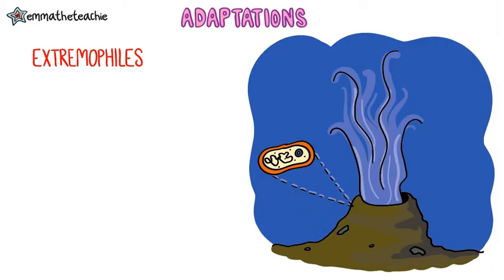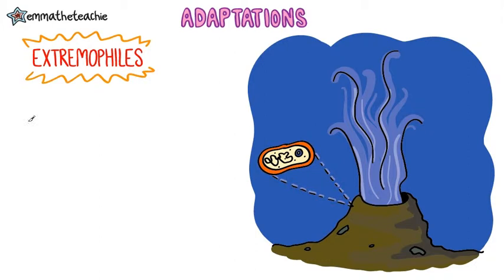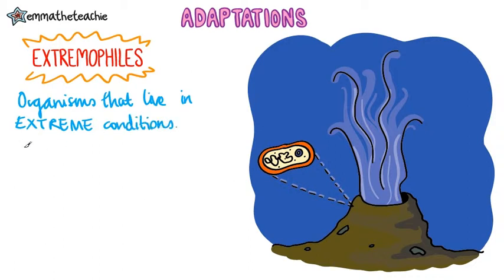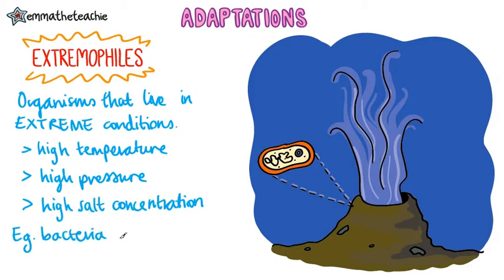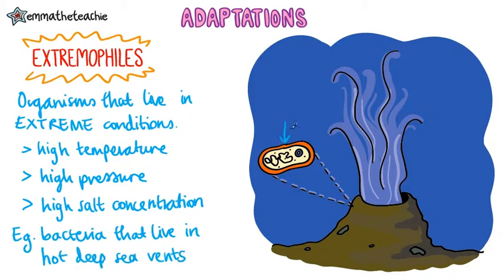There is one group of organisms that you need to know about in slightly more detail. These are called extremophiles — organisms that live in very extreme environmental conditions. For example, they may live in high temperatures, high pressure, or high salt concentrations. Bacteria that live in hot deep sea vents are called extremophiles, and these are an example you need to know.